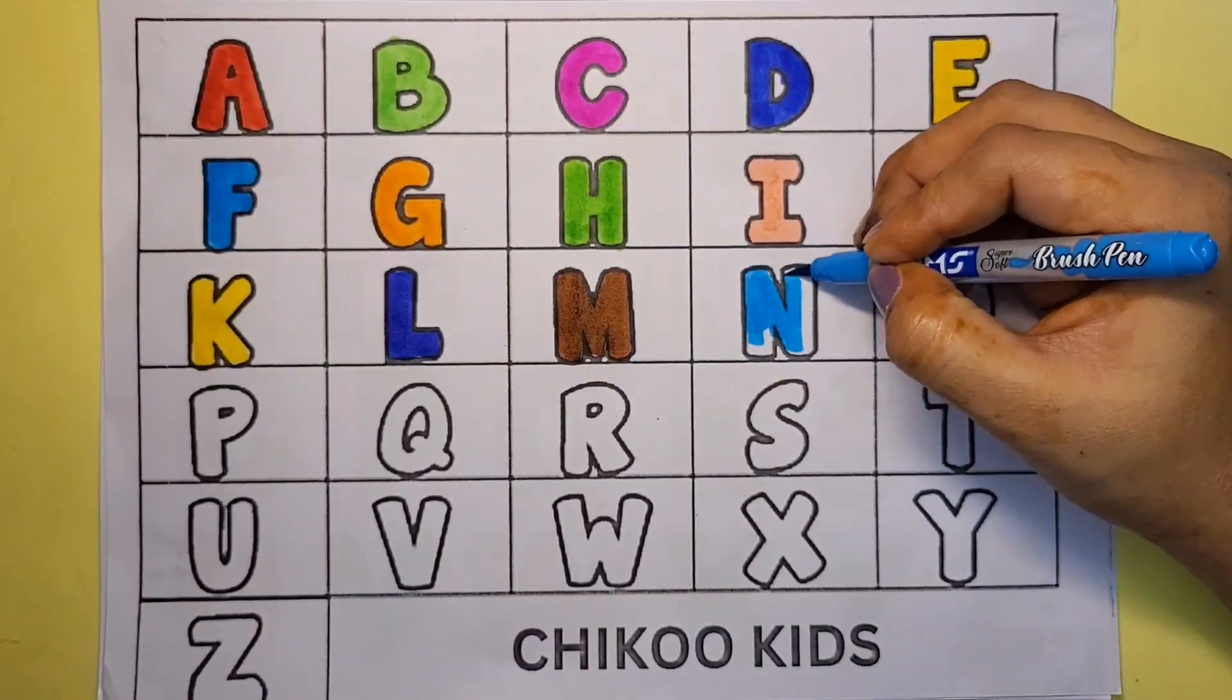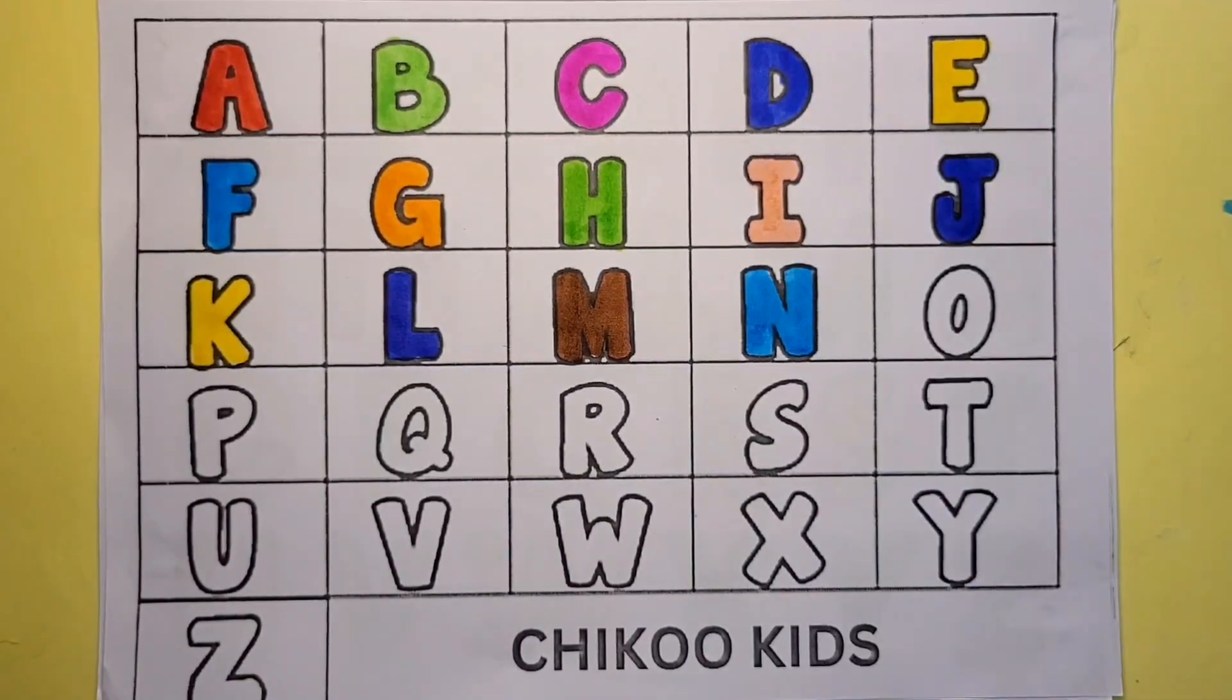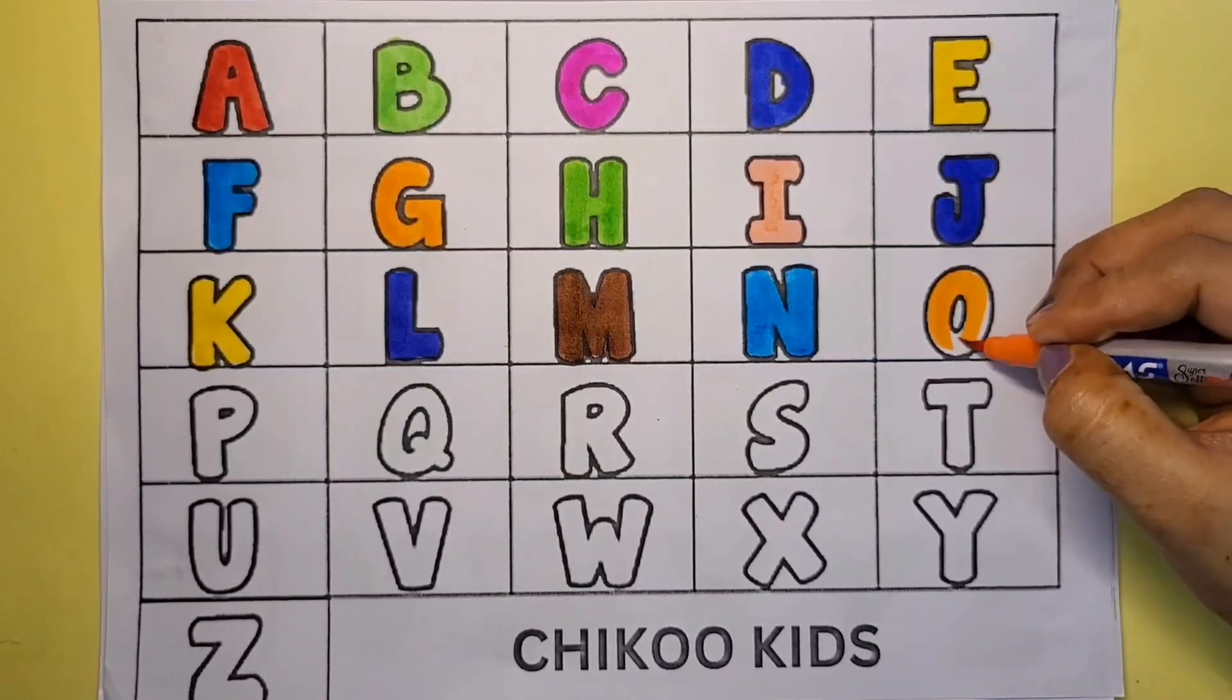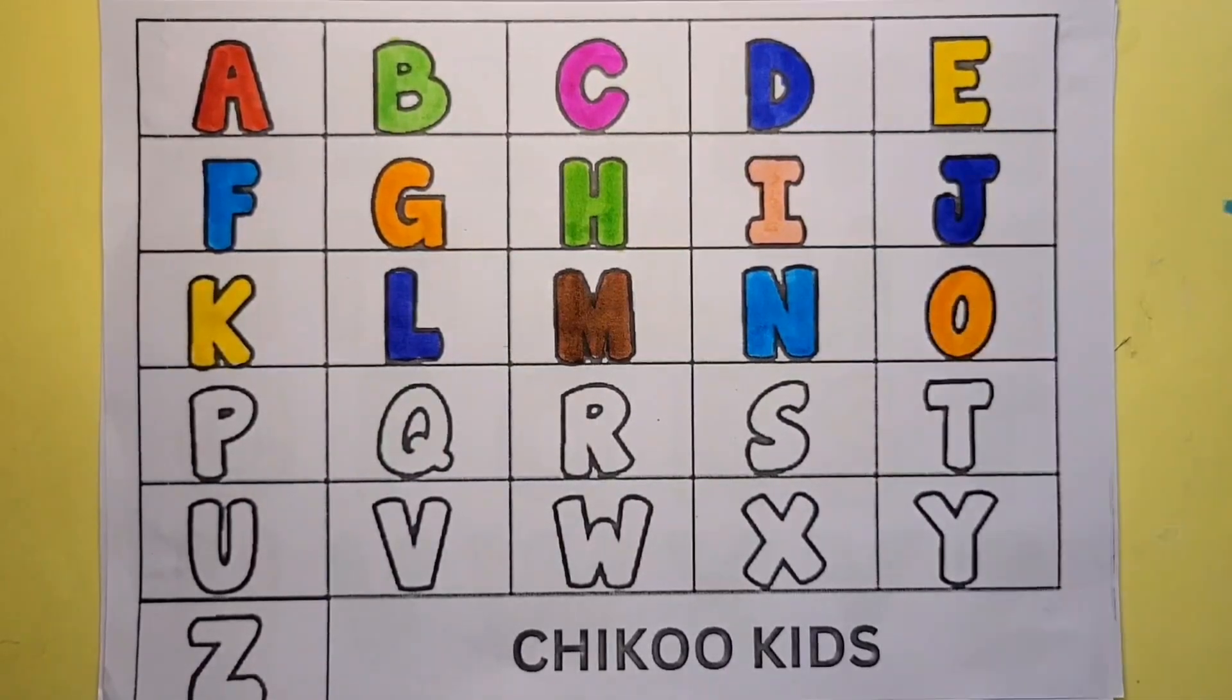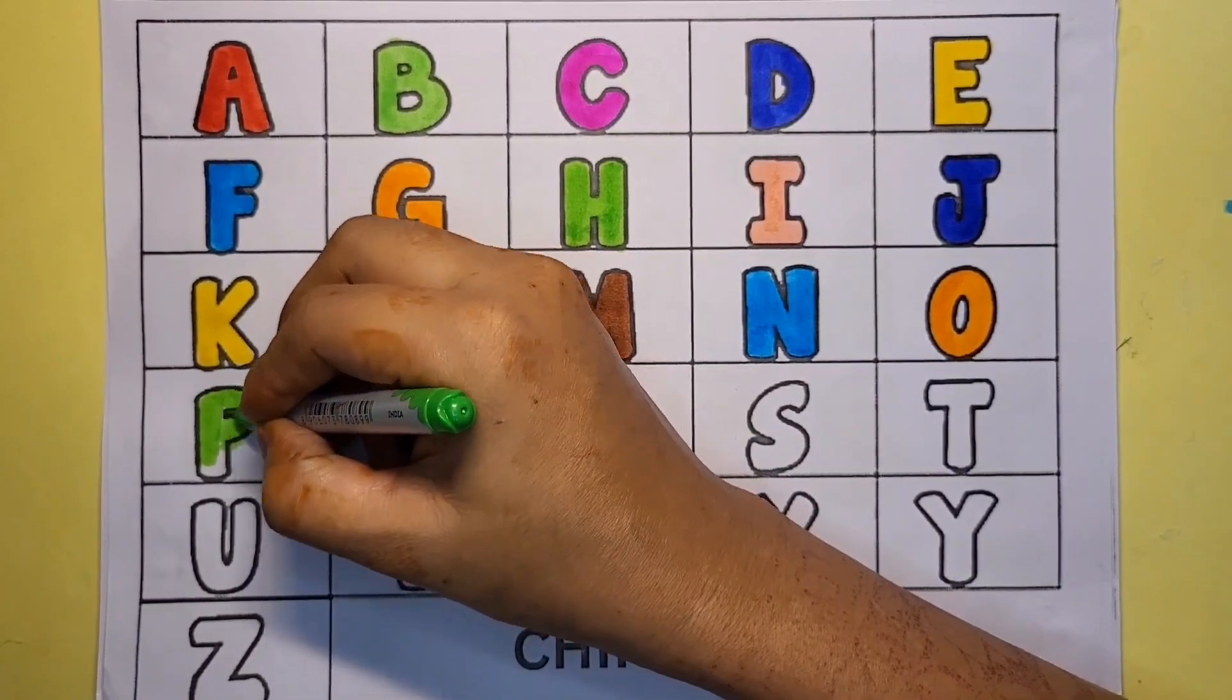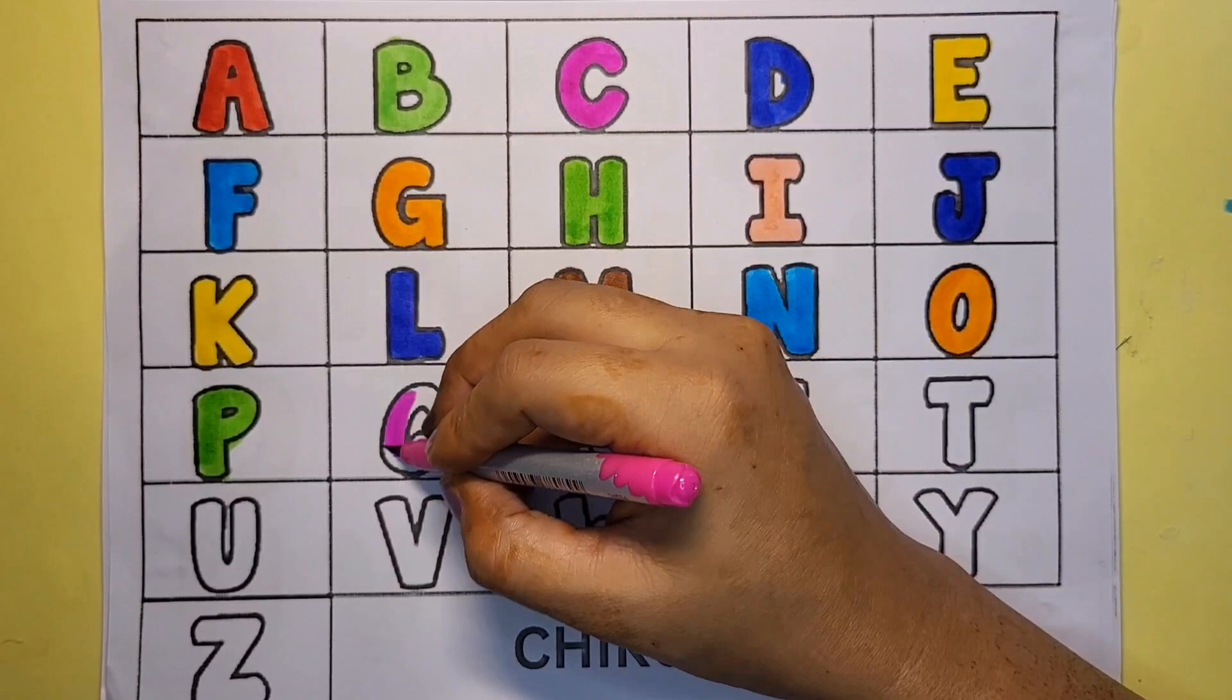Light blue color N. N for nuts. Orange color O. O for orange. Light green color P. P for parrot.